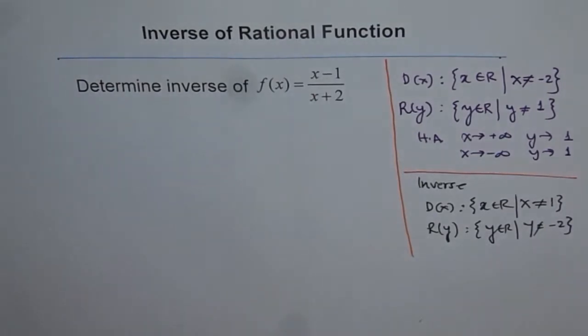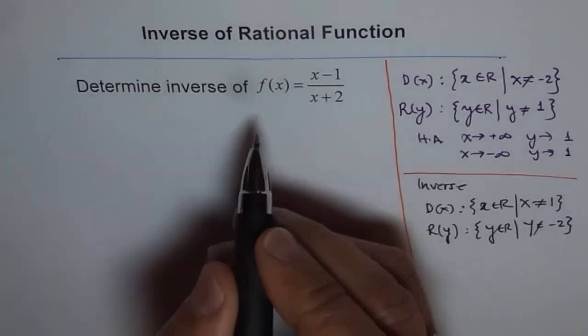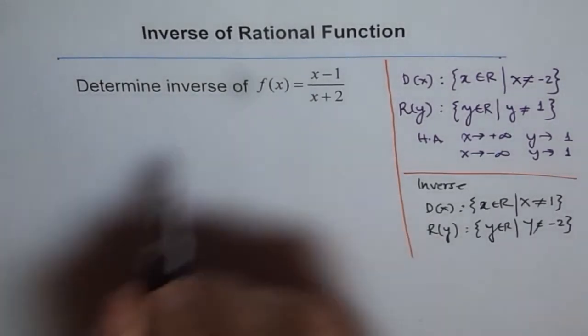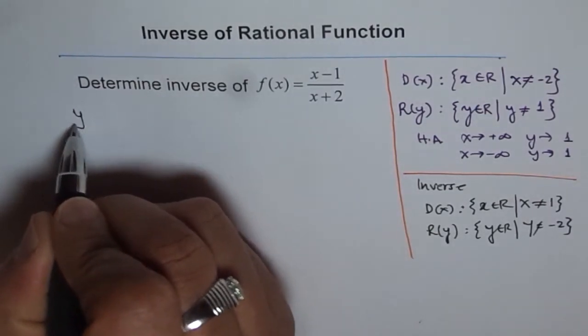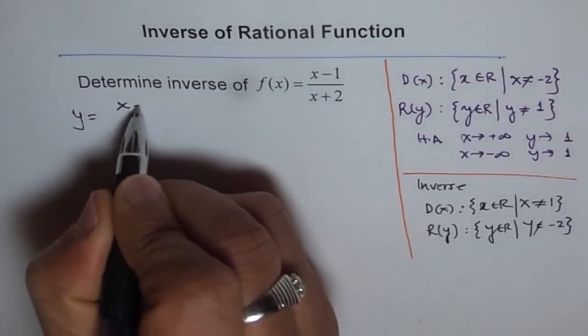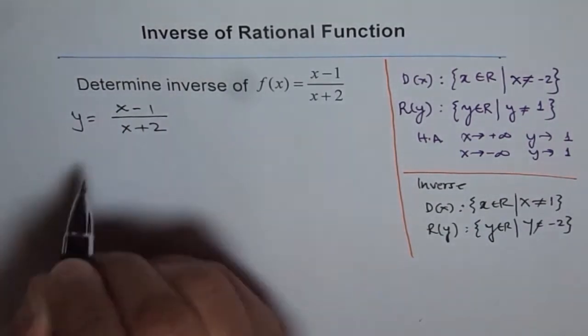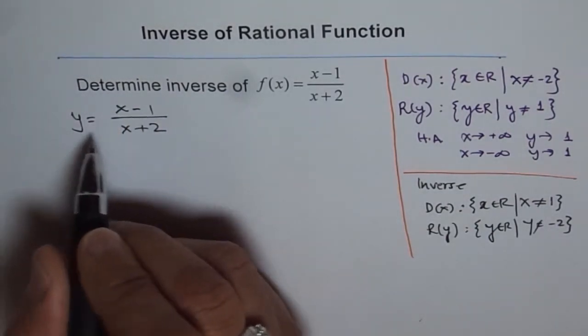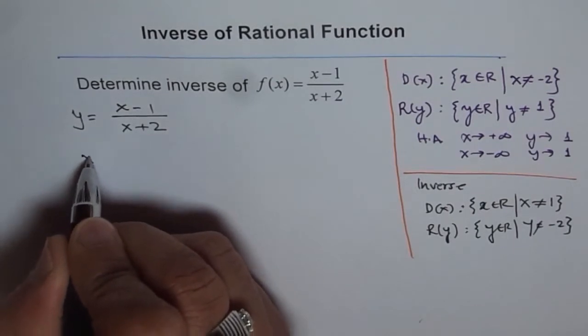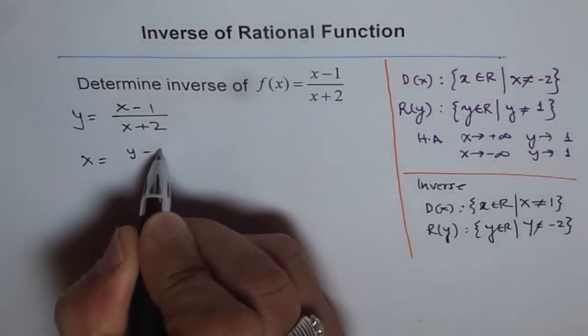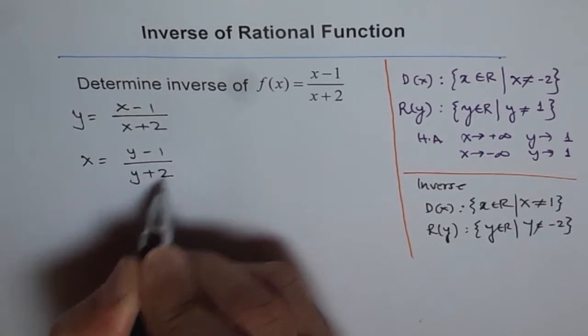Now let's try to solve this. So we have function f of x, we can write this as y equals to x minus 1 over x plus 2. To find the inverse, we will interchange x and y, and so we write x equals to y minus 1 over y plus 2.